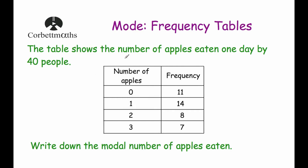So here we've got a frequency table and the question says the table shows the number of apples eaten one day by 40 people. So we've got number of apples: 0, 1, 2, or 3, and we've got the frequency, which means the number of people. So 11 people eat no apples, 14 people eat 1 apple, 8 people eat 2 apples each, and 7 people eat 3 apples each in a day. And we've been asked to find the modal number of apples eaten.